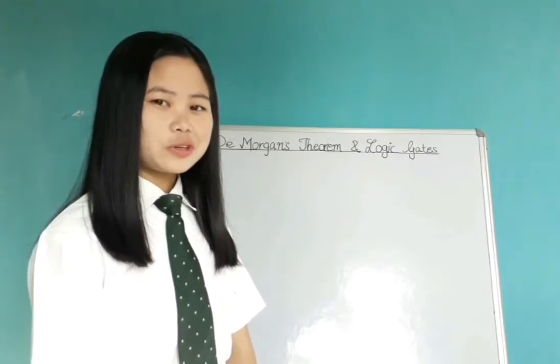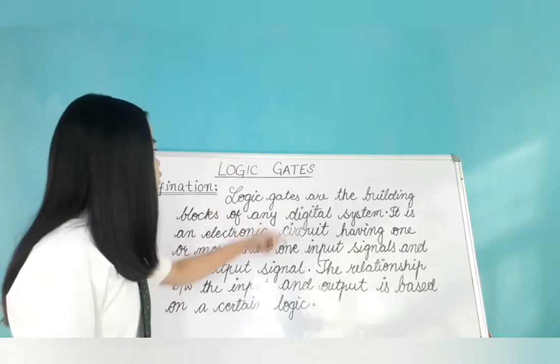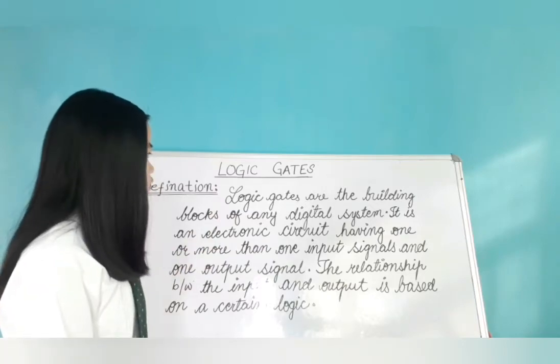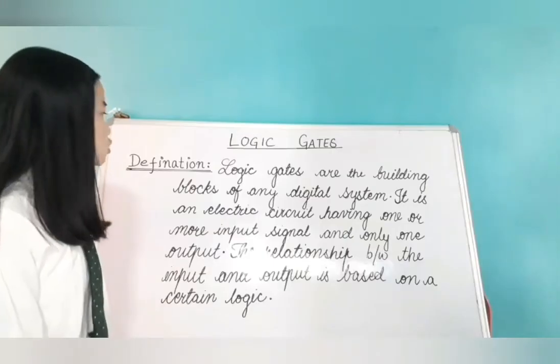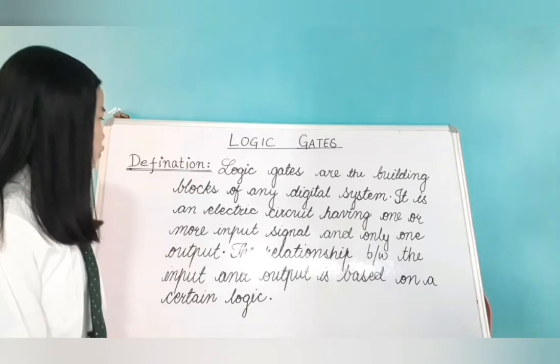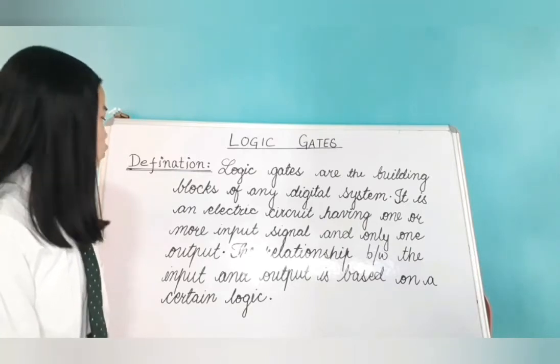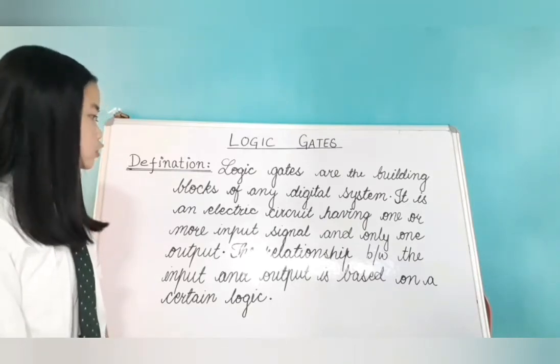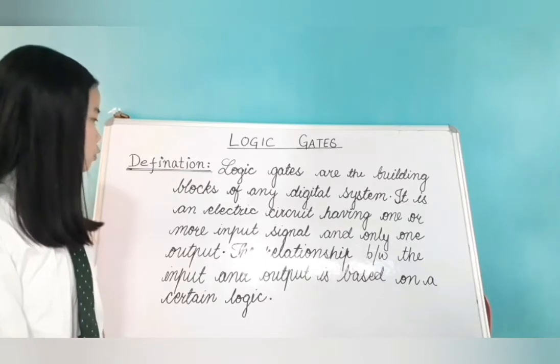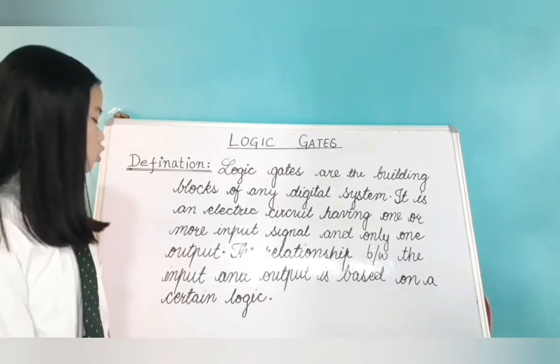First, I am going to start with logic gates. Logic gates are the building blocks of any digital system. It is an electronic circuit having one or more input signals and only one output. The relationship between the input and output is based on a certain logic. This is known as logic gates.